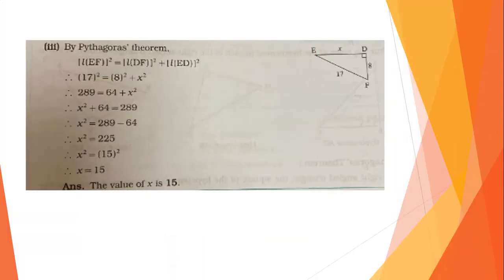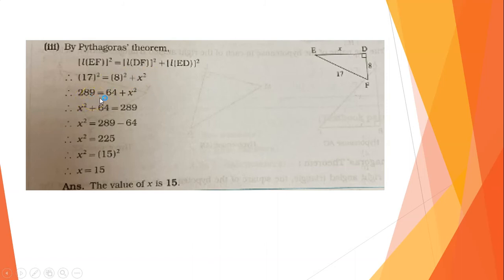Sub-question 3. The hypotenuse and one side are given; we must find the other side. By Pythagoras' Theorem, EF is the hypotenuse, so EF squared equals DF squared plus ED squared. Substituting: 17 squared equals 8 squared plus x squared. 289 equals 64 plus x squared. Rearranging, x squared equals 289 minus 64, which is 225, the square of 15. Taking square root on both sides, x equals 15.